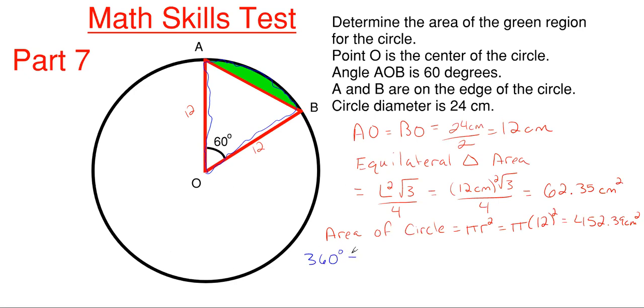We have 360 degrees in a total circle, we are going to divide that by 60 degrees and that gives us 6. What this means is that our sector is 1/6 the total area of our circle.